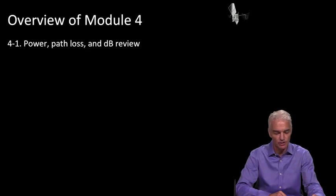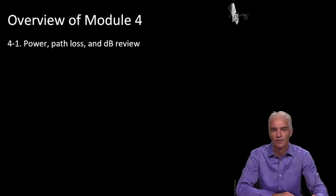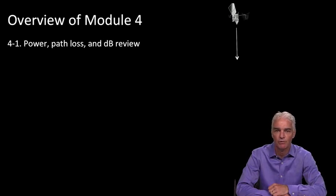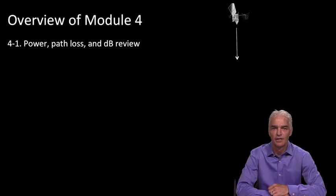We'll begin with the signal at the satellite. We'll look at the power of the signal at the satellite and then look at how it propagates through space and what the path loss is. In the process, we'll do a dB or decibel review because decibels are something that we use extensively in our analysis.